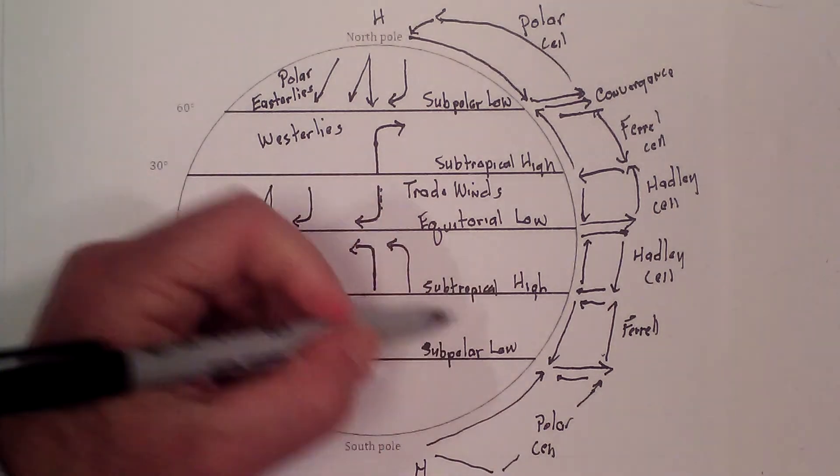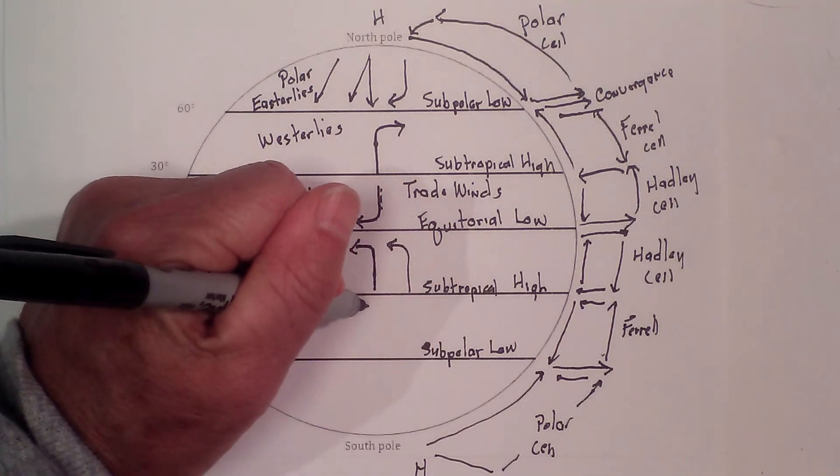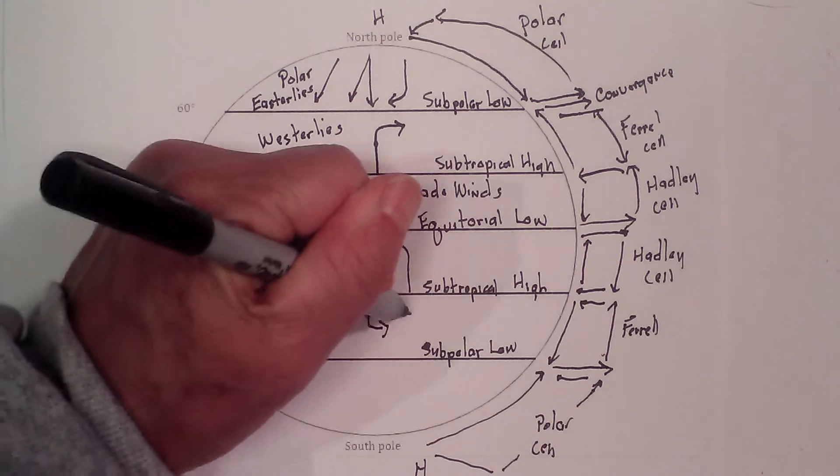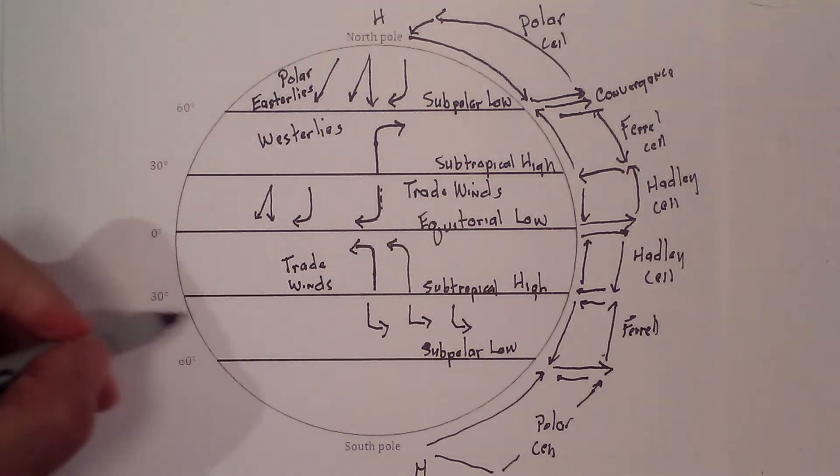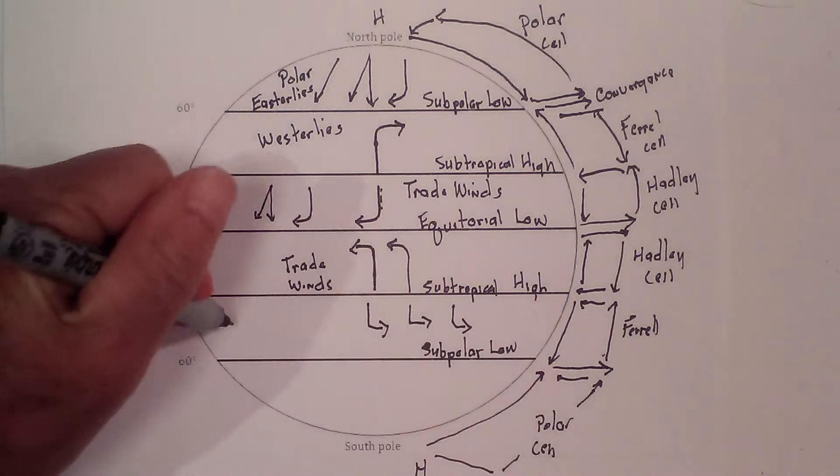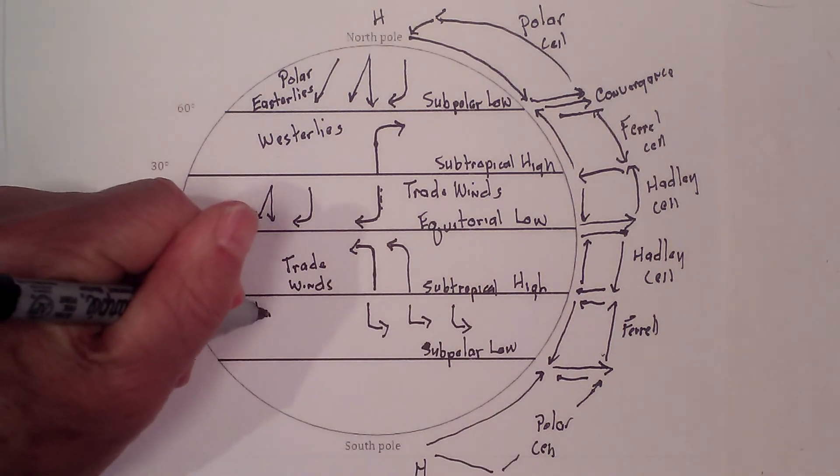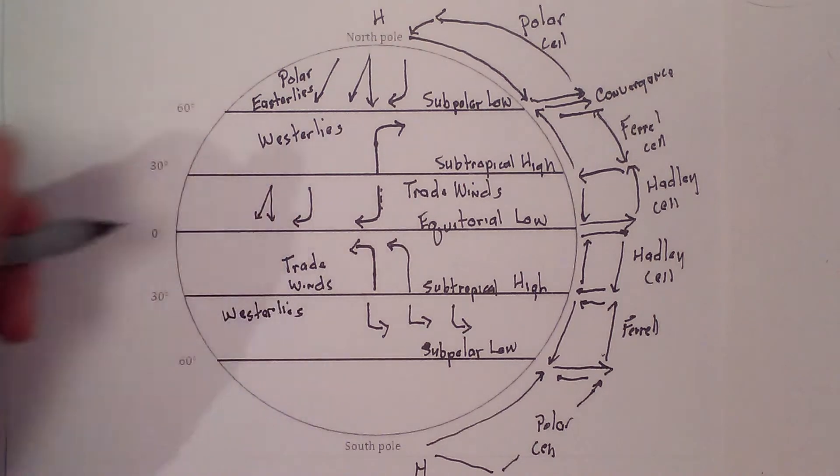Now we're going from high to low. So we're going in the opposite direction. We're going to deflect to the left. And you know, this is west. This is east. So these are the westerlies.